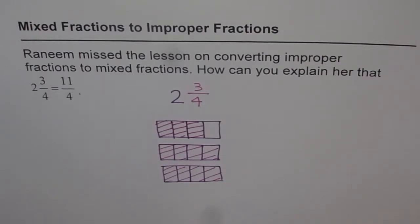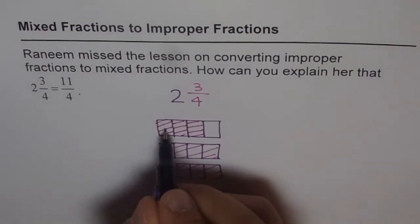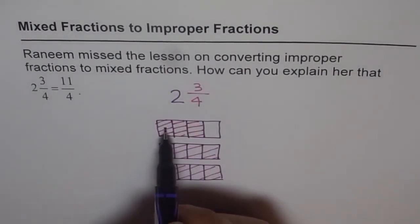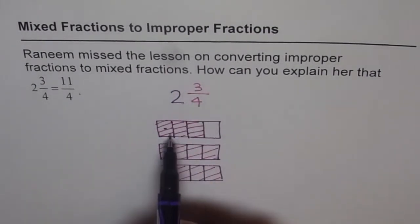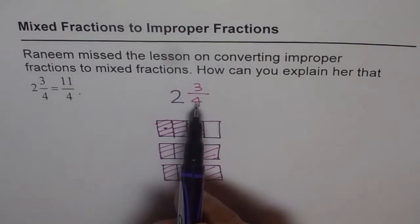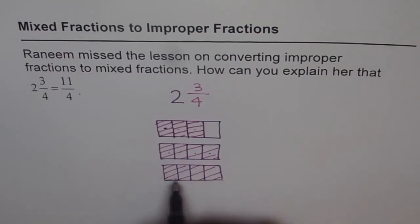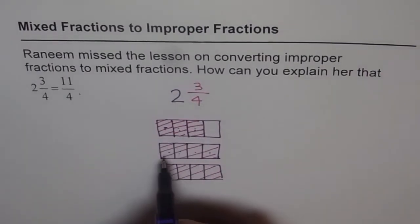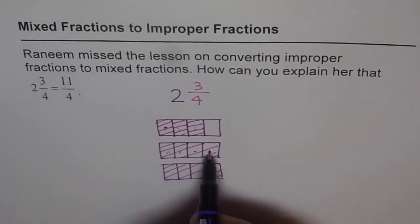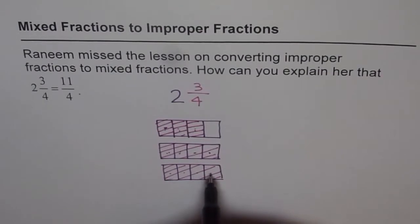Let us check it out. Each small portion here represents 1 fourth. As you know, this is 3 fourths, 3 out of 4. How about these? These are also 1 fourths. Let us count them all. How many 1 fourths do we have? 1, 2, 3, 4, 5, 6, 7, 8, 9, 10, 11.